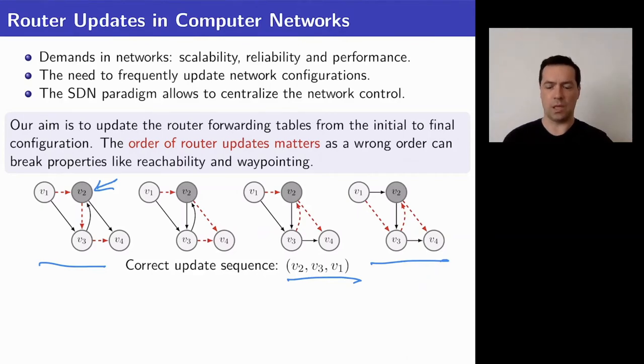If we first update the router v2 and then we redirect the flow from v2 directly to v4 we still preserve the reachability and waypointing. After that we can update the router v3 that is at the moment not included in the routing and finally we update the router v1 that redirects the flow to v3 into the final configuration and in any intermediate routing configurations we preserve both the reachability and waypointing properties.